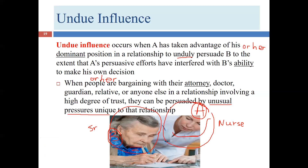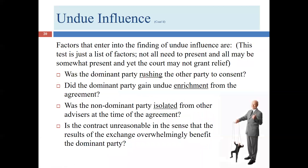Nurse says she's starting a business and needs capital: 'Would you be willing to help? It's going to make you a ton of money.' Senior says she'd like to think about it and consult her son, daughter, accountant, and attorney. Nurse responds, 'You have to decide today — I need to sign the lease and today is the very last day.' Under these circumstances, we've satisfied the first element of the undue influence analysis: the dominant party is rushing the other party into the situation.